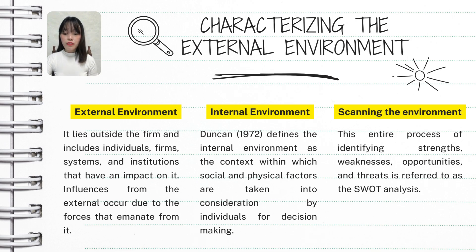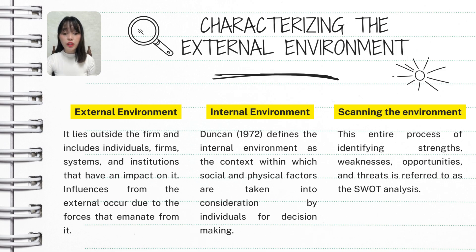Examples of external forces include: individuals — customers, influencers, and other people who affect what a business sells and how it sells; firms — competitors or partners that can change market dynamics; systems — broader systems like legal frameworks or economic systems that dictate how business can function; and institutions — government bodies, regulatory agencies, or industry associations that set rules and standards.